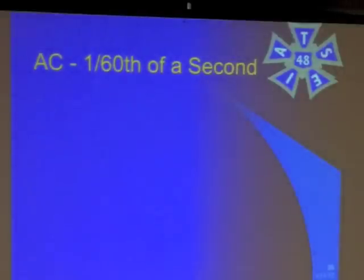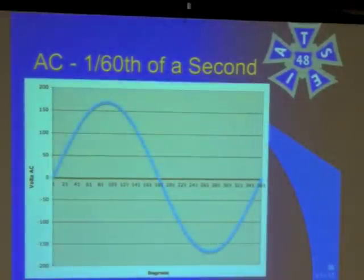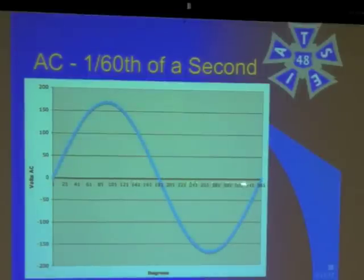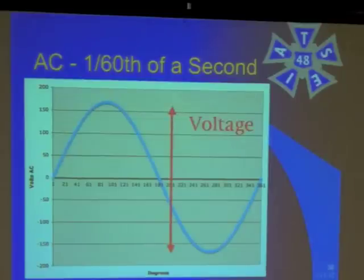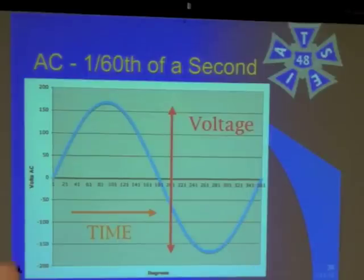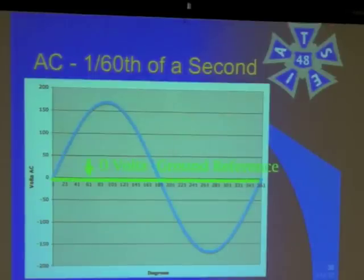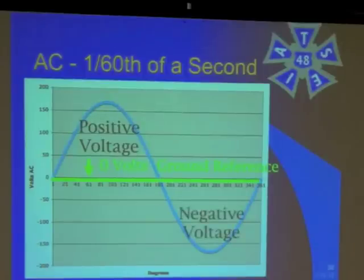If you look at an AC waveform in 1/60th of a second, you can see where the voltage starts at zero, then swings all the way up, goes back to zero, swings all the way negative, and returns to zero. The horizontal axis shows degrees from 0 to 360, and the vertical axis shows voltage — going up to 200 positive and down to 200 negative. Our zero-volt reference is right in the middle. The waveform swings positive above that and negative below.